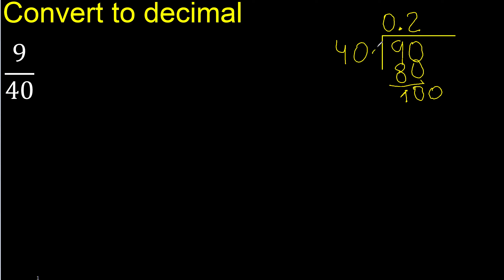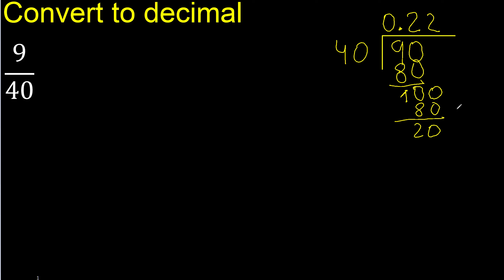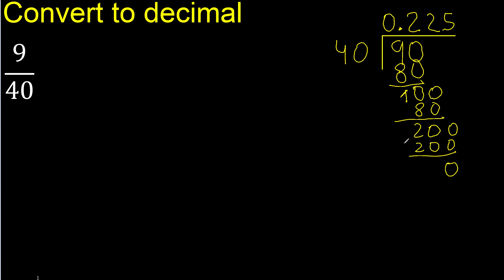100. 40 multiplied by which number? Multiply by 3 is greater; multiply by 2 is 80. Subtract: 20 remains. Bring down 200. 40 multiplied by 5 is 200. Subtract: 0.